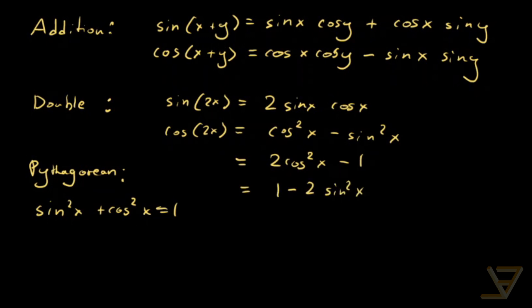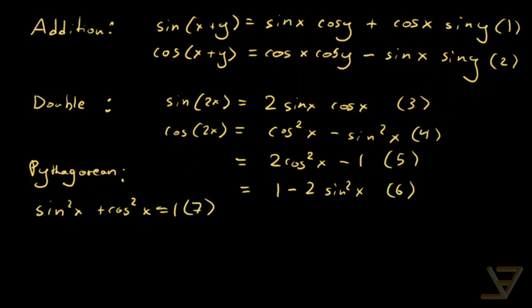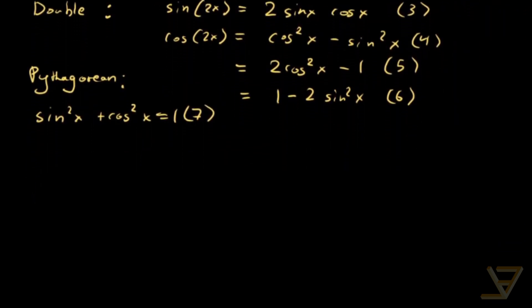So we're going to need a whole bunch of identities to prove the triple angle identities. Let's label them: this one is 1, this one is 2, this one is 3, this one is 4, this one is 5, this one is 6, and we have 7. So we're going to need 6 or 7 identities for this, meaning there's going to be a lot of algebraic manipulation involved.